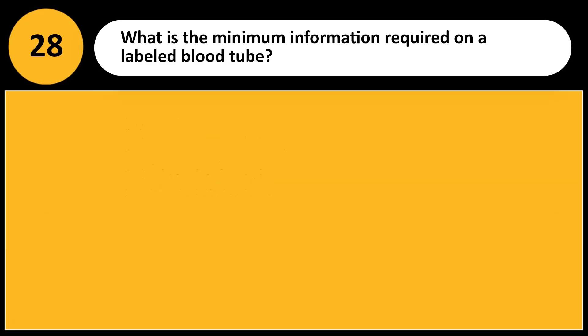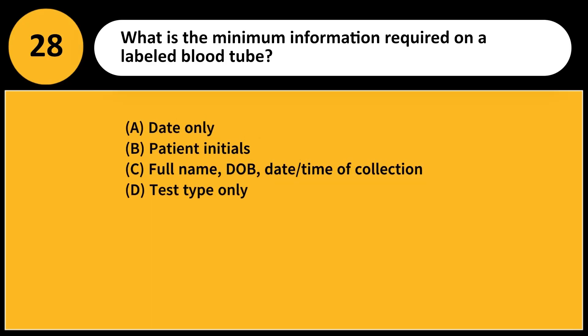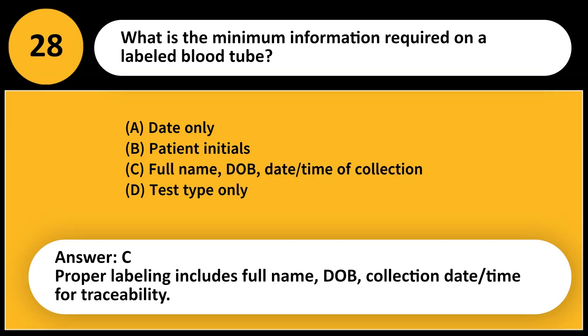What is the minimum information required on a labeled blood tube? A. Date only. B. Patient initials. C. Full name, DOB, date, time of collection. D. Test type only. Answer: C. Proper labeling includes full name, DOB, collection date, and time for traceability.